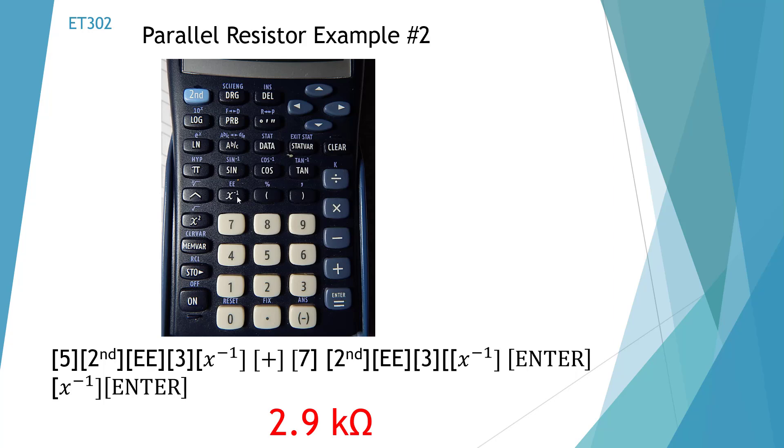Inverse it again and then push the enter key and we're going to come up with 2.9 k ohms. And again this resistance is smaller than either two of our parallel resistors.